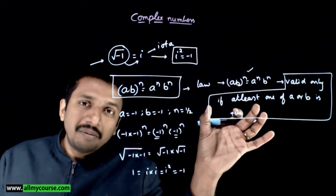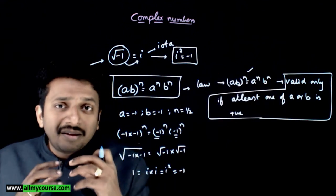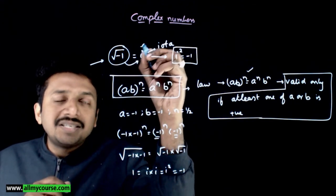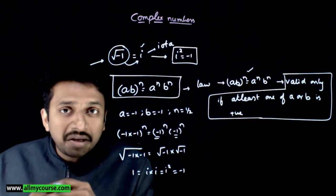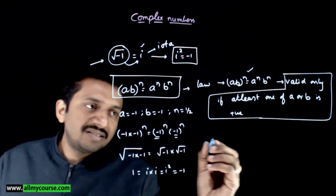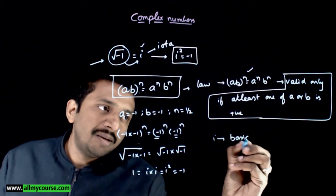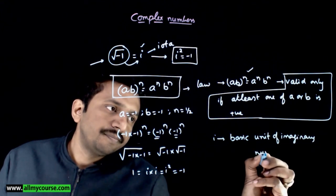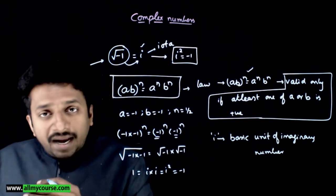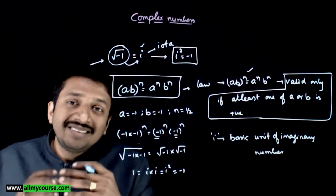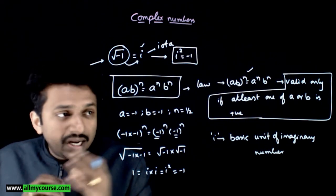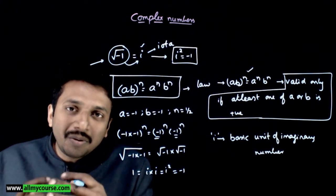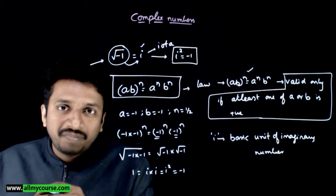From then on, i has been considered a number — the basic unit of imaginary numbers — and its properties have been studied extensively. Now that we accept i = √(-1) as a number, let us look at its further properties.